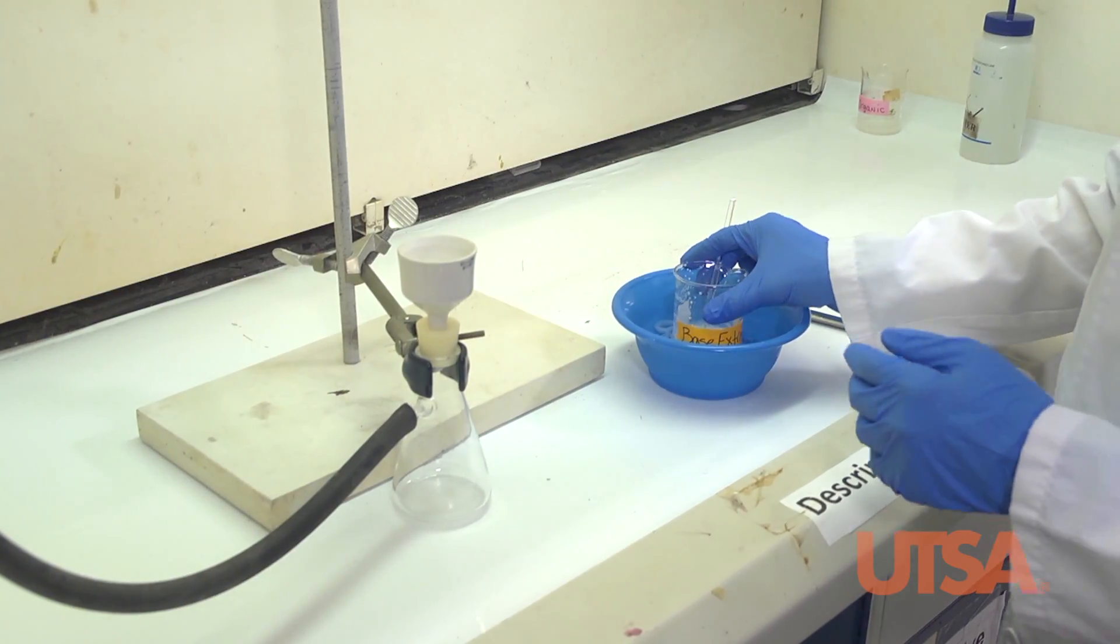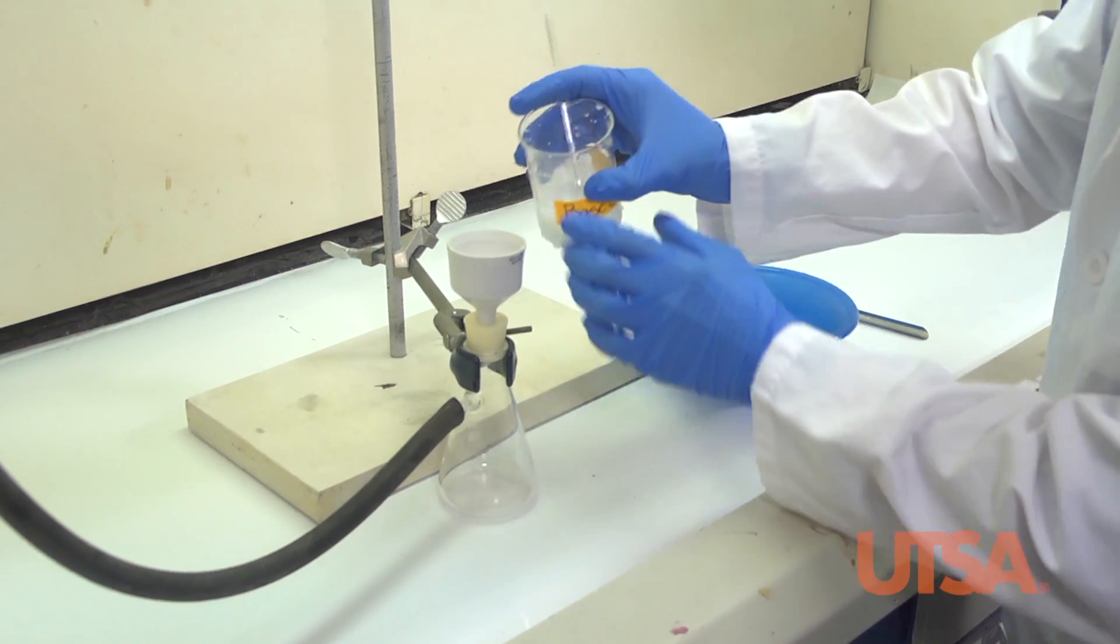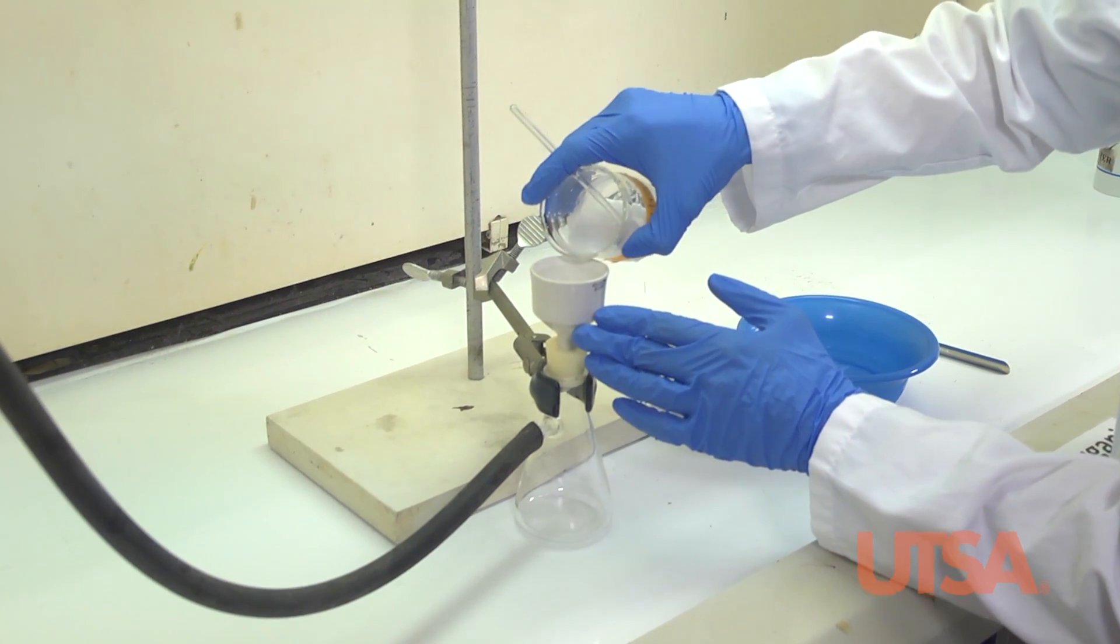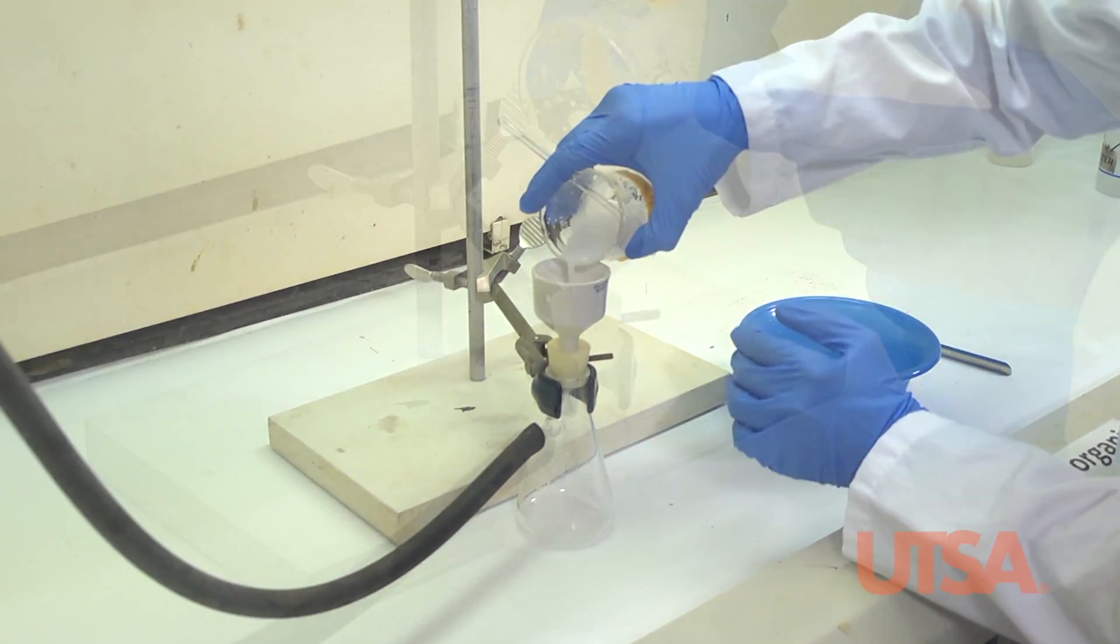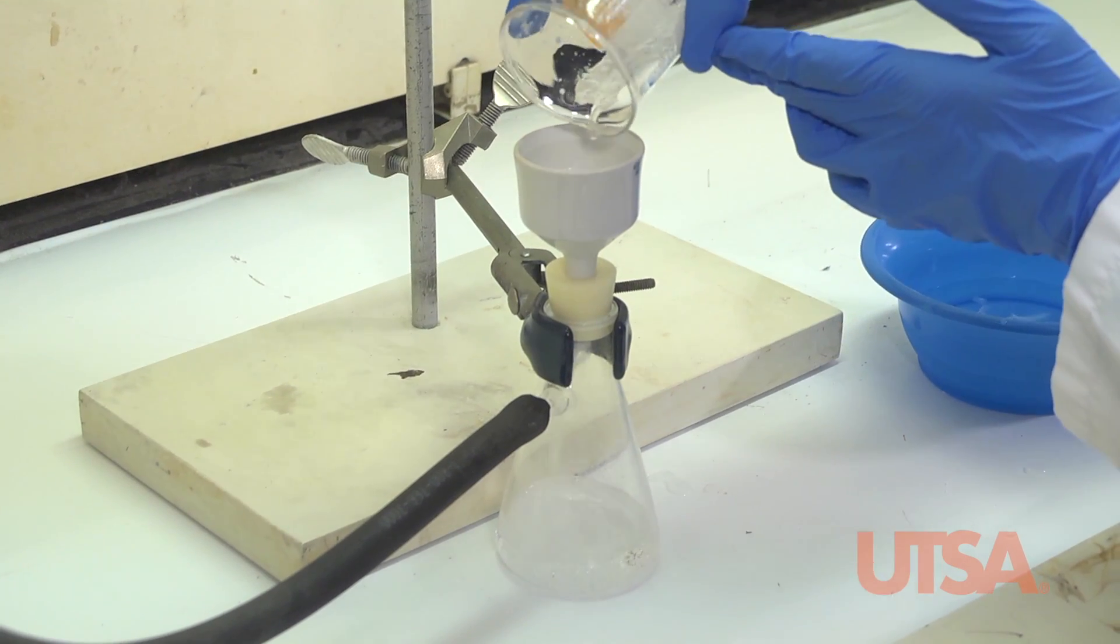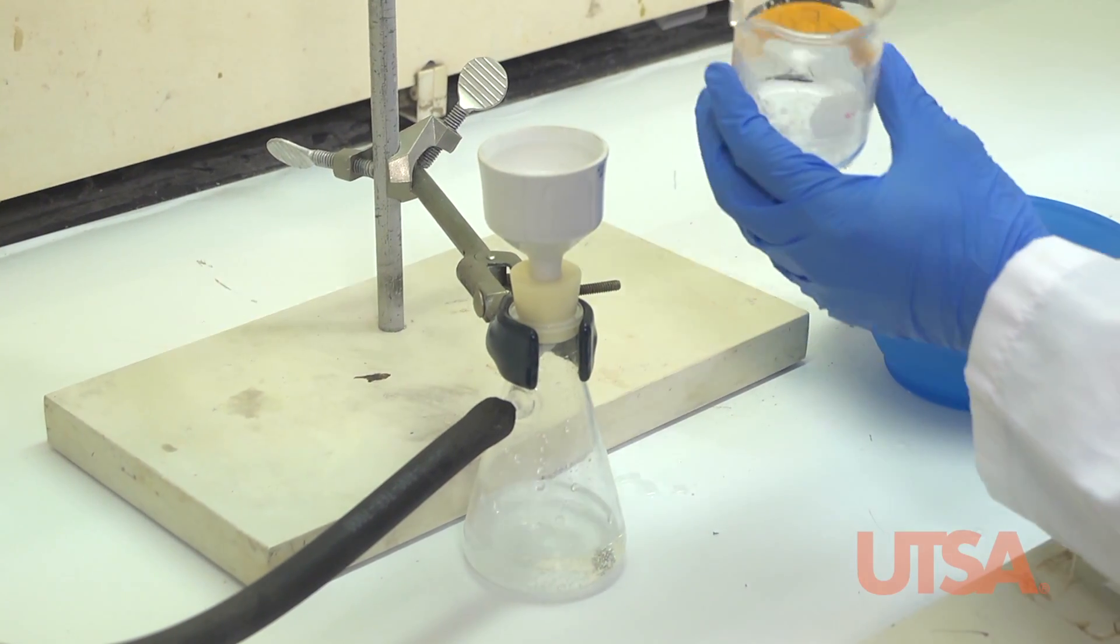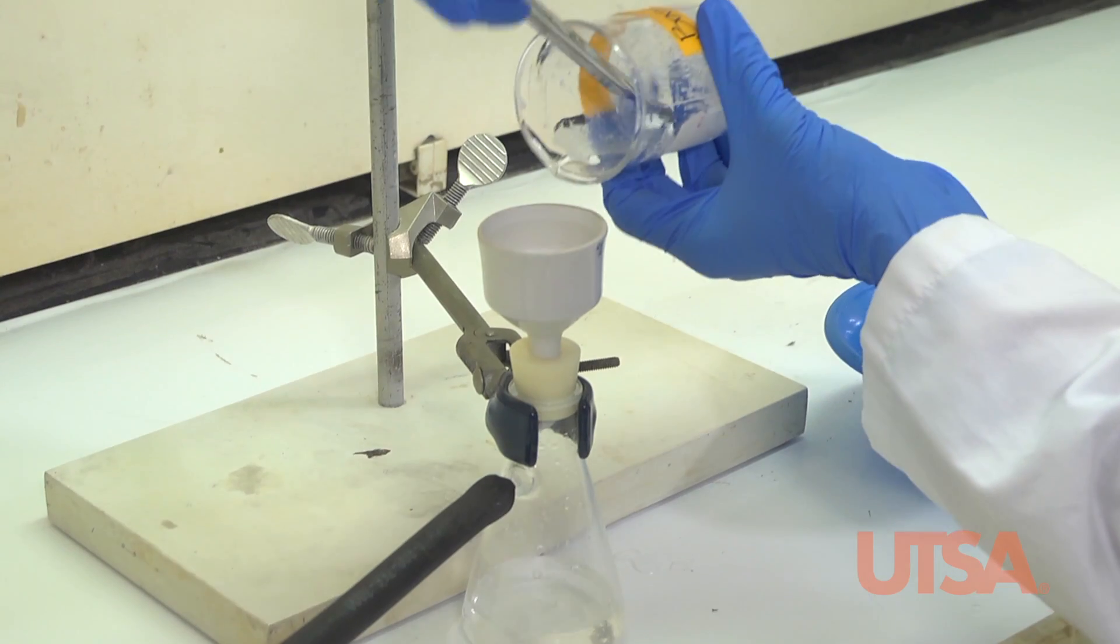With the vacuum on, pour the base extract onto the filter paper. Use a spatula to scrape out whatever crystals remain.